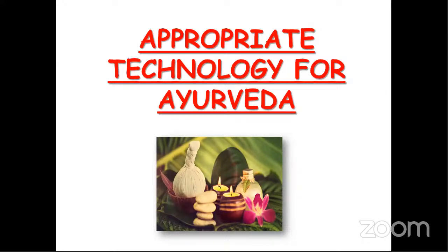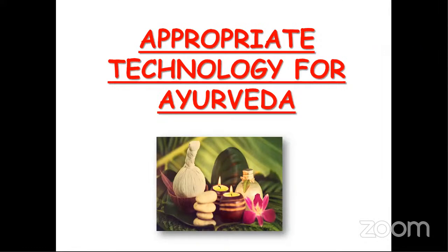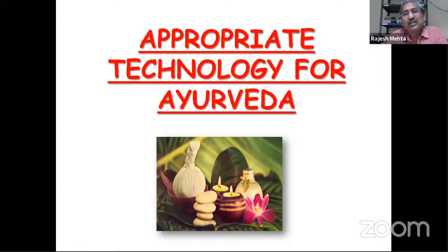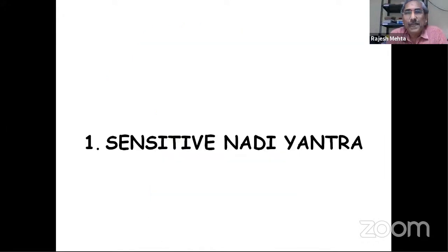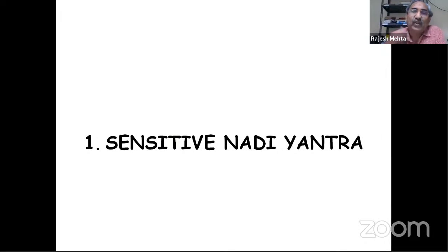Ayurveda is thousands of years old, but that doesn't mean it doesn't require appropriate technology, because pollution has changed the nature of food. We need to apply appropriate technology to Ayurveda also. For example, Nadi Yantra — Nadi examination can find out which kind of disease a person has based on Vata, Pitta, and Kapha. If we have an instrument sensitive enough at low cost, it can be applied in villages and people can find out their factor based on Nadi and take preventive measures. Before parameters in the blood change — before your cholesterol rises, before your blood sugar rises — there is a change in Nadi. That's why Nadi Yantra will be very useful for early detection and treatment.